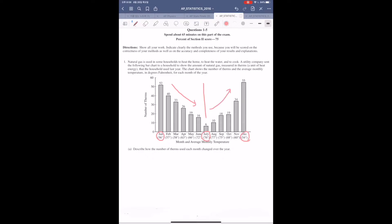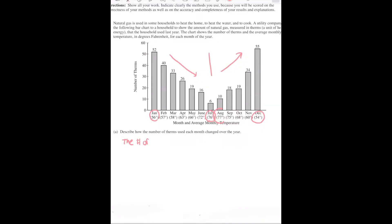So, what we're going to write in the answer is the number of therms used decreased each month from January to July, and then increased each month from July to December.